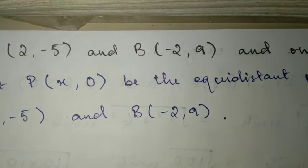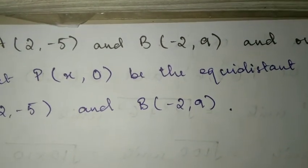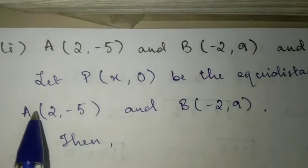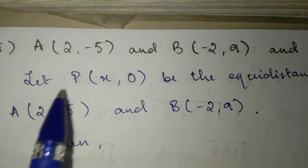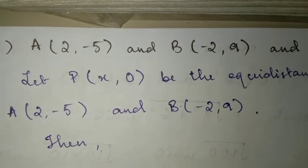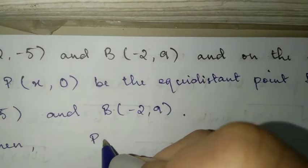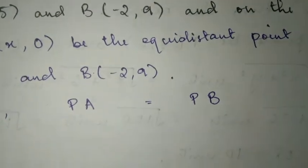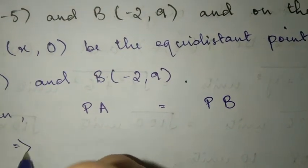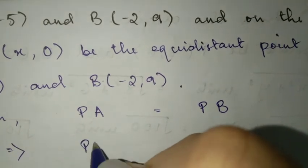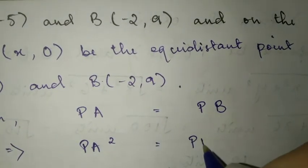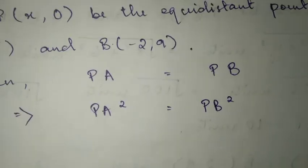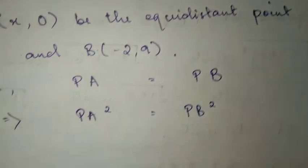Now, PA squared equals PB squared. The formula is square root, but we will square it so the square root cancels.